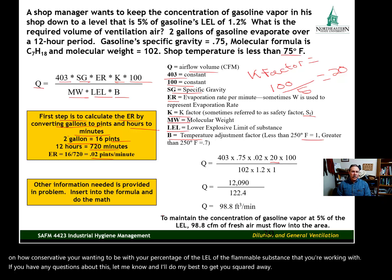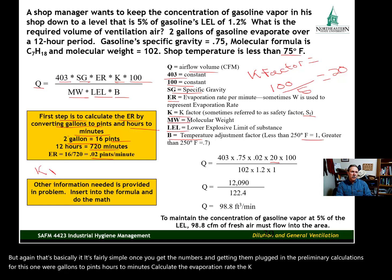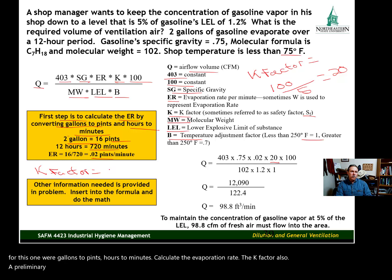That's basically it. It's fairly simple once you get the numbers and get them plugged in. The preliminary calculations for this one were gallons to pints, hours to minutes, calculate the evaporation rate, and the K factor also—a preliminary calculation—equals 100 divided by the percent of LEL. All right, I'll see you in the next video.